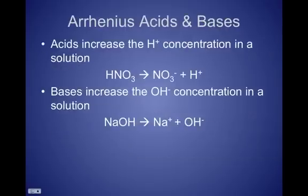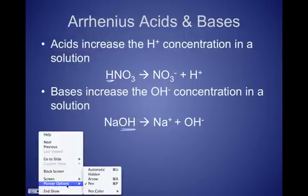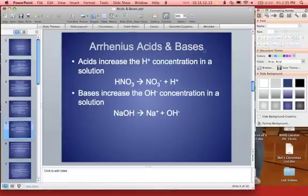So the first definition that we're going to talk about is the Arrhenius definition. This is the oldest definition of acids and bases. Basically all it says is that acids will increase the hydrogen ion concentration in a solution. Here's an example of nitric acid ionizing into the nitrate ion and the hydrogen ion. And bases will increase the hydroxide ion concentration of the solution. You can see here sodium hydroxide separating into the hydroxide ion. Basically this definition says that acids start with an H, bases end with an OH. It's not a great definition because it leaves a lot of things out. And on that note, I've got to call this one quick and we'll start part two.